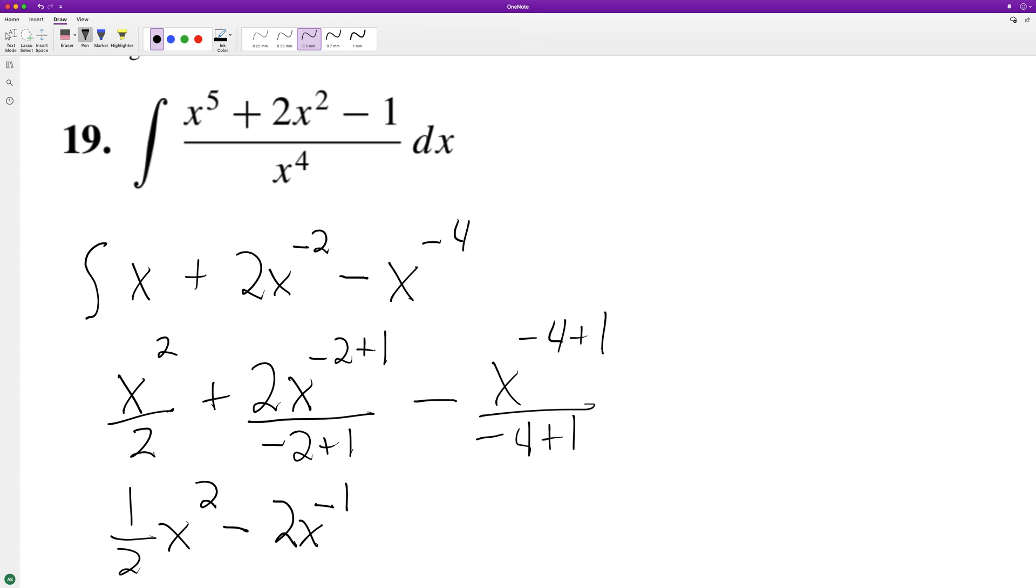And you know, the negative exponent can be put on the bottom to become a positive exponent. And then finally, plus, because the negative down here, this ends up being one third x raised to the negative three, and then plus c.